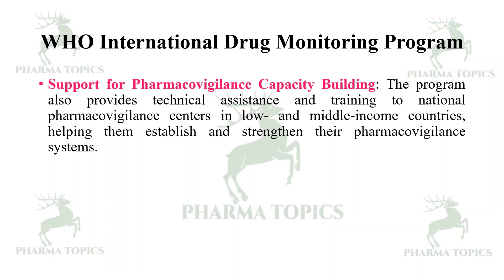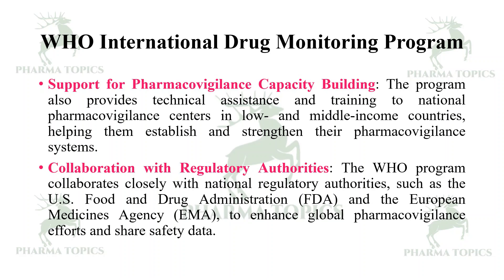Support for pharmacovigilance capacity building: the program provides technical assistance and training to national pharmacovigilance centers in low and middle income countries, helping them establish and strengthen their pharmacovigilance systems. The WHO program also collaborates closely with national regulatory authorities such as the US FDA and the European Medicines Agency to enhance global pharmacovigilance efforts and share safety data.